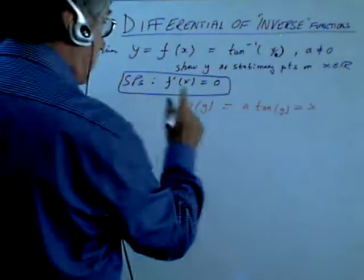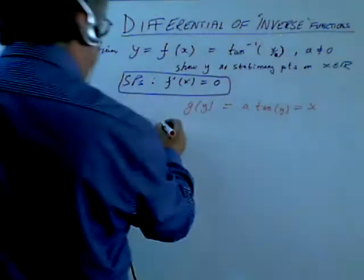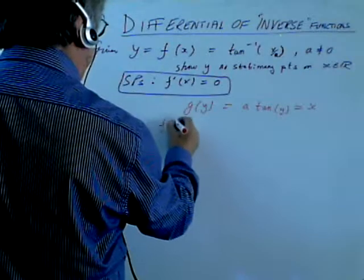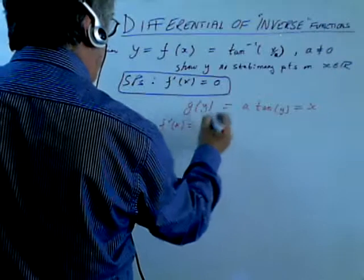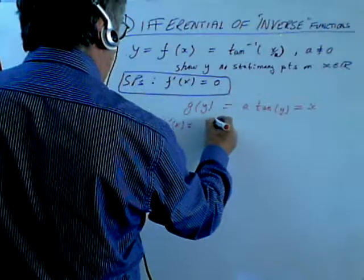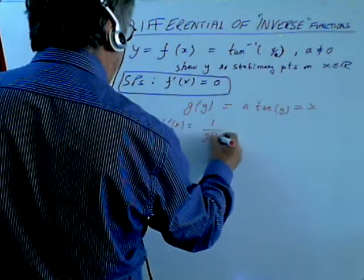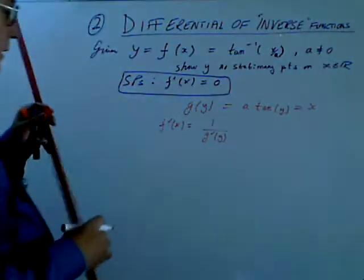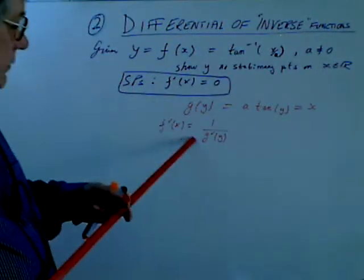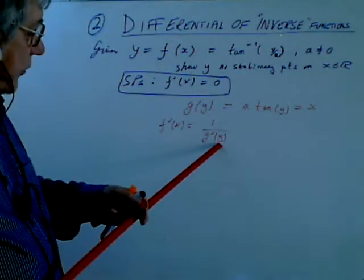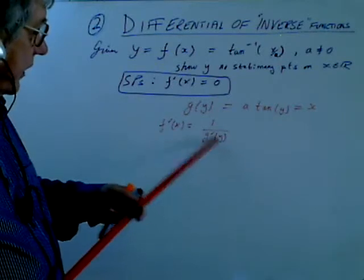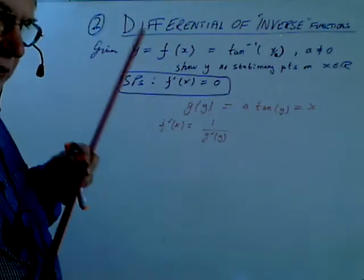And the technique we used in video one was to show that f'(x) was just simply 1 over G'(y). That's the y here, of course, being the independent variable for G, and x is the independent variable for f.